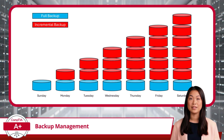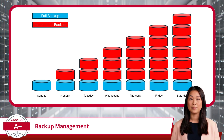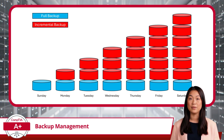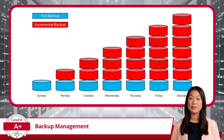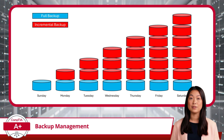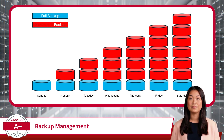If differential backups are known for striking a balance, incremental backups push efficiency even further. Like the differential backup type, incremental backups start with a full backup. However, instead of tracking all changes since the last full backup, incremental backups only record the changes made since the last backup of any type, whether it was full, differential, or incremental. Imagine a daily backup routine: on Sunday, you perform a full backup. On Monday, an incremental backup saves only the changes made since Sunday. On Tuesday, it saves only the changes made since Monday, and so on. Each incremental backup is smaller and quicker to create because it only captures the most recent changes, making it highly efficient in terms of storage and time.